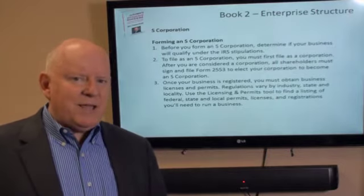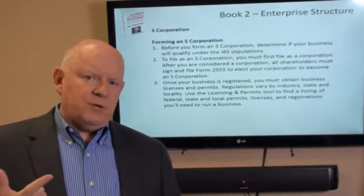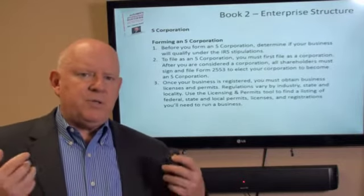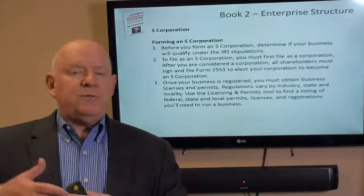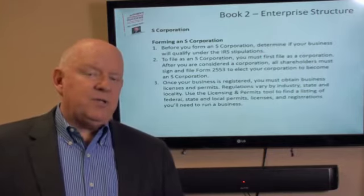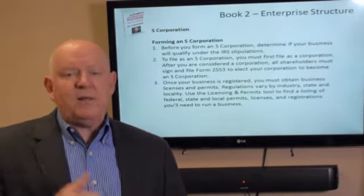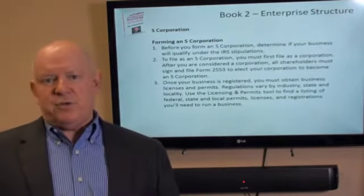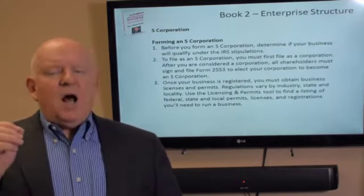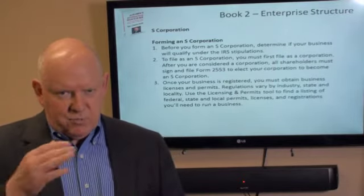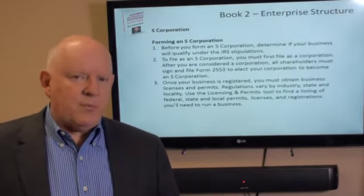You do that within 75 days of either the point of formation or the first of the year. So if you want to be a C-Corporation for three years and then become an S-Corporation, you can do so by filing within 75 days of the beginning of the year, or prior to the beginning of the year. You can file any time prior to the beginning of the year, or within 75 days of the point in time you incorporate, as long as it's the beginning of the tax year.